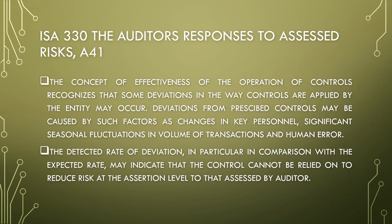Still under RSA 330, referring to A41: the concept of effectiveness of the operation of controls recognises that some deviations in the way controls are applied by the entity may occur. Deviations from prescribed controls may be caused by factors such as changes in key personnel, significant seasonal fluctuation in volume of transactions, and human error. The detected rate of deviation, particularly in comparison with the expected rate, may indicate that the control cannot be relied upon to reduce risk at the assertion level to that assessed by the auditor.